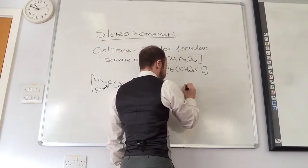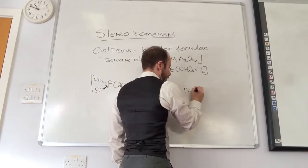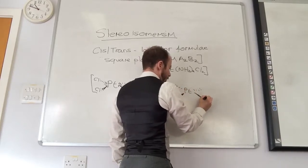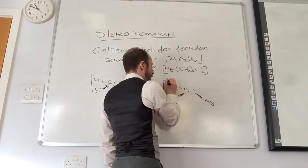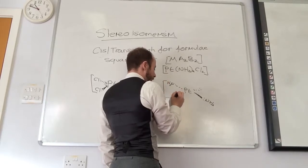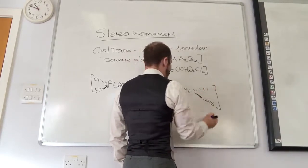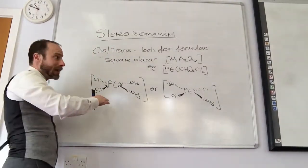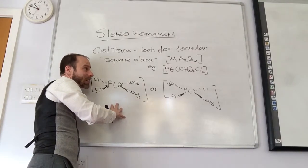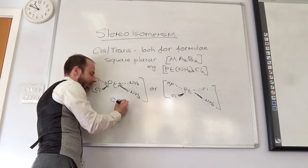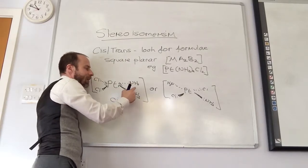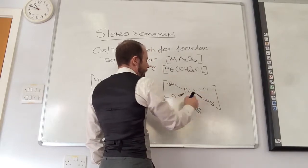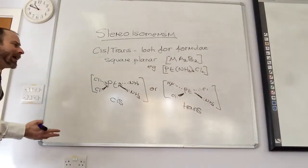Or again, same bonds, you can have the arrangement where now the ammonias are opposite each other and the chlorides opposite each other. This one is going to be the - is that going to be cis or trans? Cis. Because they're next to each other, they're on the same side, and that one is trans, they are opposite each other. So that happens in square planar complexes.